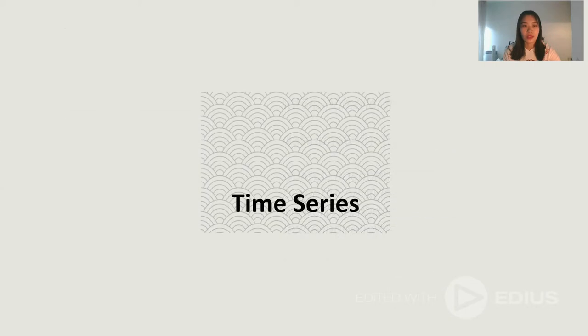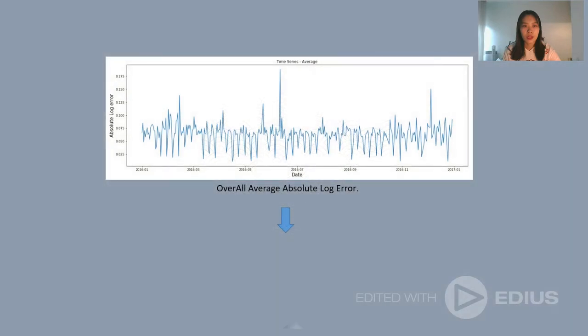Next, we want to use time series to visualize the relationship between absolute log error and transaction date. Here we only use the Train CSV file. From the overall average log error figure, we could see that the fluctuation of this time series has certain regularity. It is a stationary process. So the time series does not have time-dependent structure. So we only used to study the data of 2016 and the data in 2017 doesn't influence the final result.